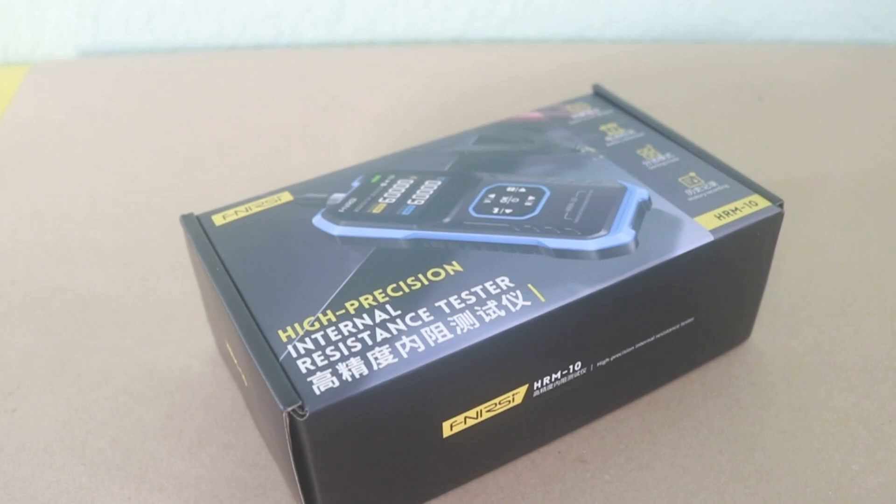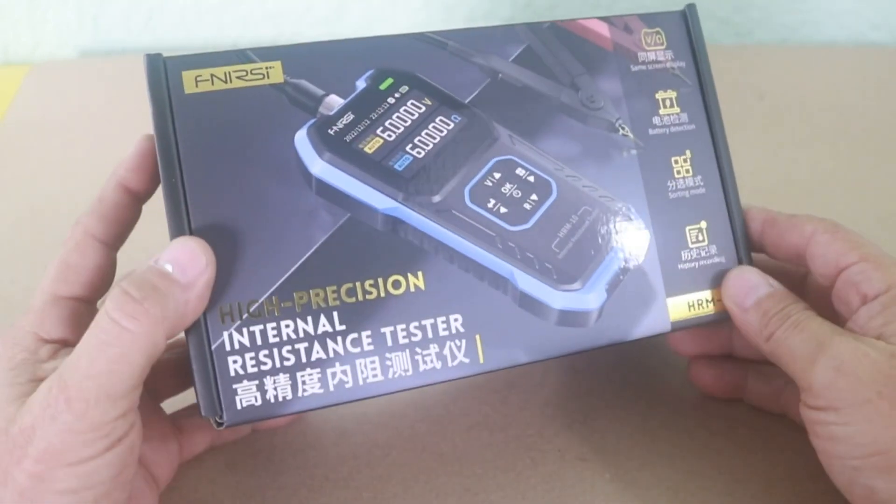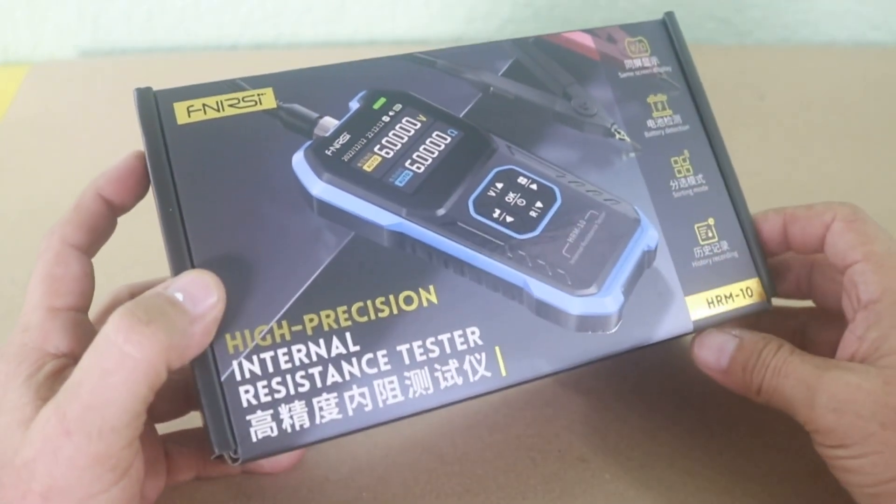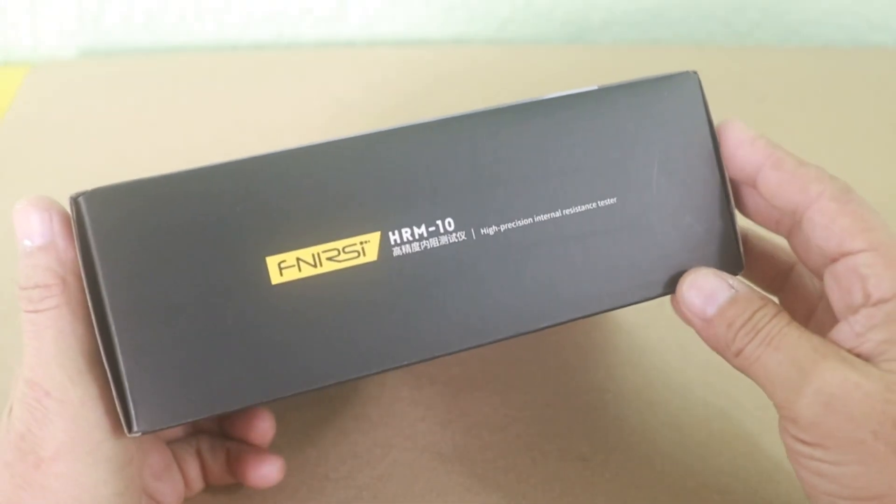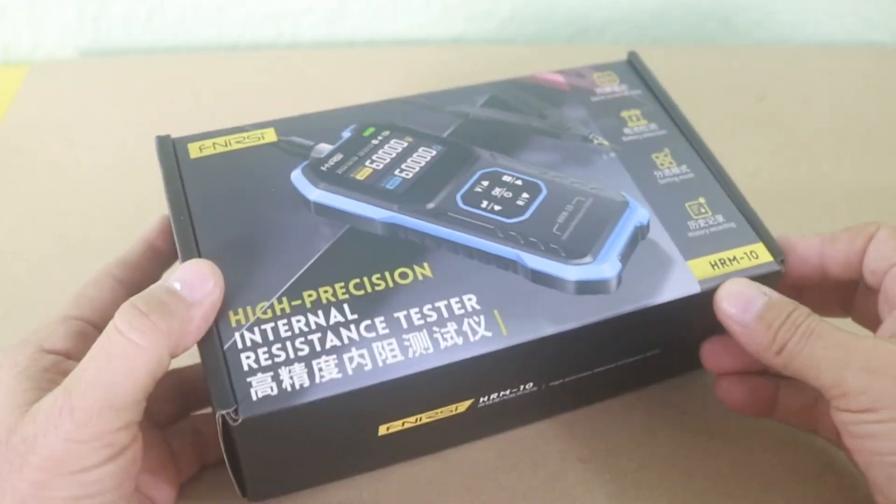Hello, welcome to Ludic Science. Today I received this internal resistance tester for batteries. It is from FNIRSI and the model is HRM10. So let's check it out to see how it works.